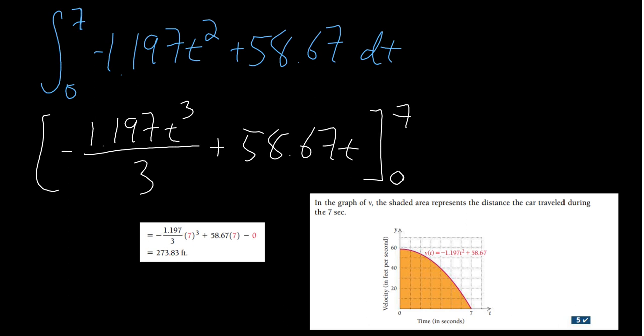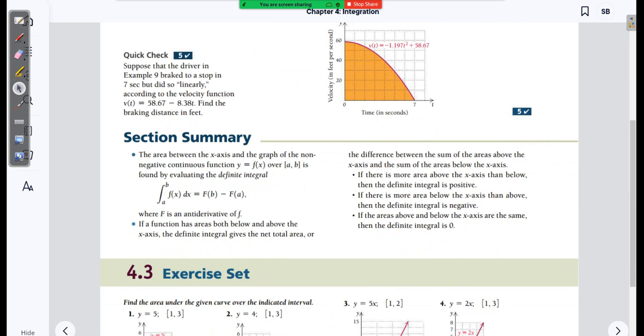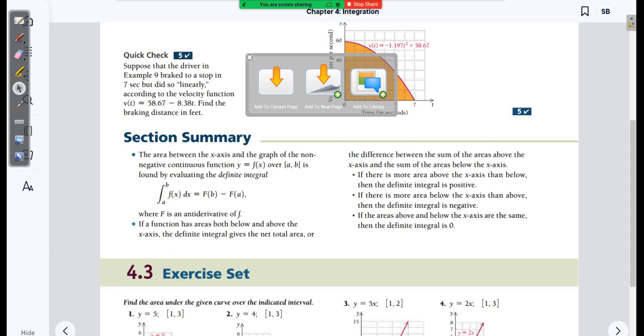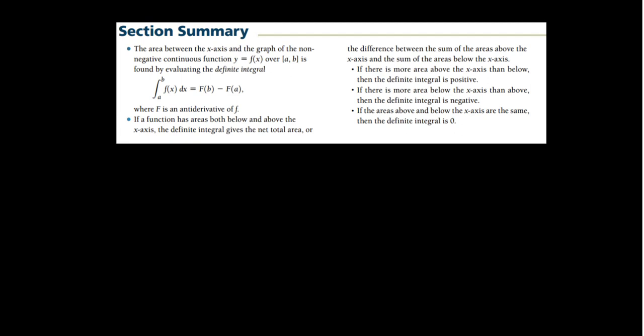Those last two examples really show what the area under a curve means. The airline example is interesting because we see you can't always operate at a profit — you need a certain number of tickets sold to reach profitability. That concludes today's lecture.